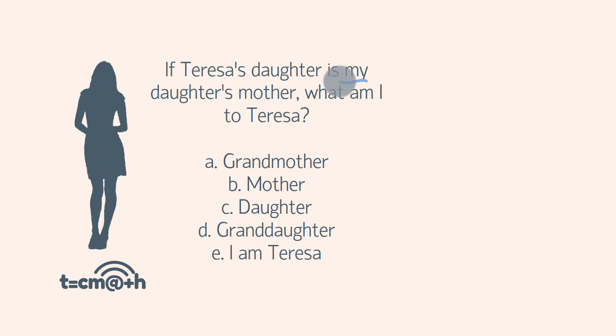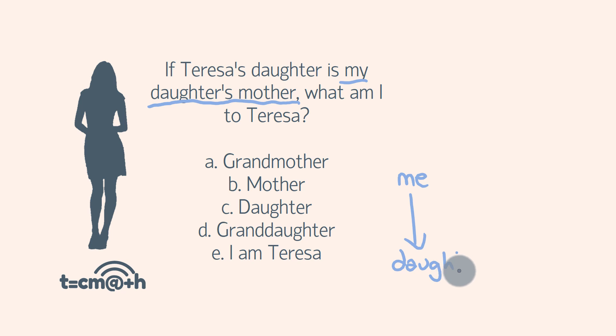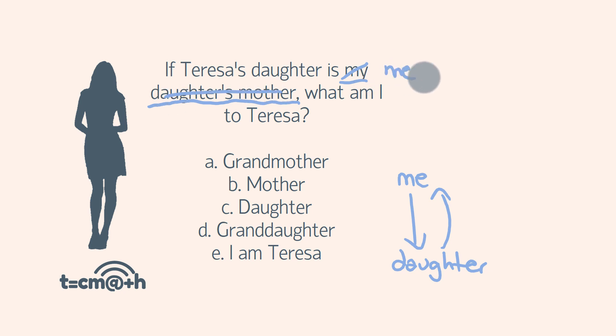First off, let's focus on this part: my daughter's mother. If I think about this — I've got me, and I have my daughter, and I am of the female gender — my daughter's mother would in fact be me. So we can re-word this question and replace 'my daughter's mother' with just 'me', because that's who it's talking about. So: if Teresa's daughter is me, what am I to Teresa? This is nice and easy now — that means I am her daughter.